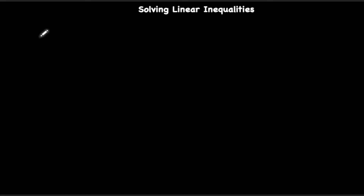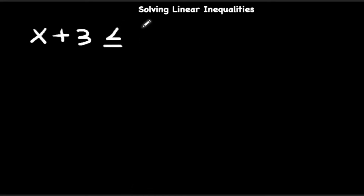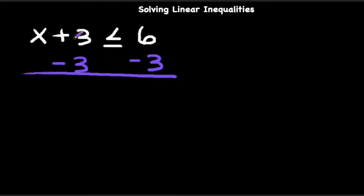So let's go over some examples, with the first one being x plus 3 is less than or equal to 6. Your ultimate goal is to isolate x, so we're going to do that by subtracting 3 on both sides of the inequality. The positive 3 minus 3 cancels out, so we're left with x is less than or equal to 3.